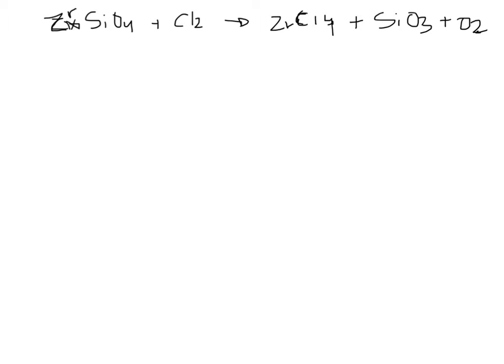So number five: a process by which zirconium metal can be produced from mineral zirconium orthosilicate starts by reacting it with chlorine gas to form zirconium-4-chloride. That's a mouthful. Lucky for us, the balanced equation was given and it's written right here.